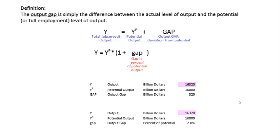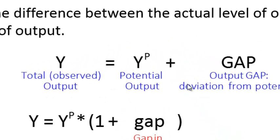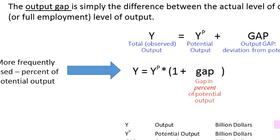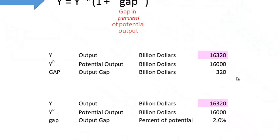The output gap is the difference between the actual or observed level of output and potential or full employment output. Total or observed output is equal to potential plus the gap. More frequently, we measure the gap in terms of percent of potential output.